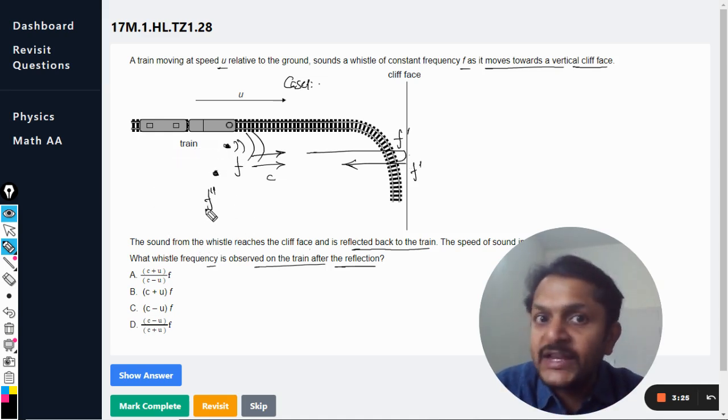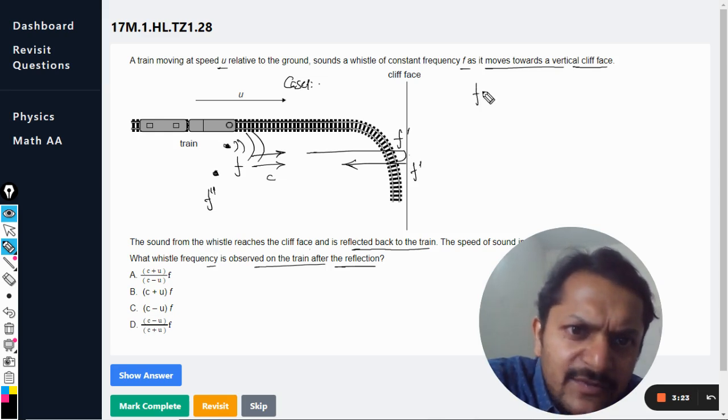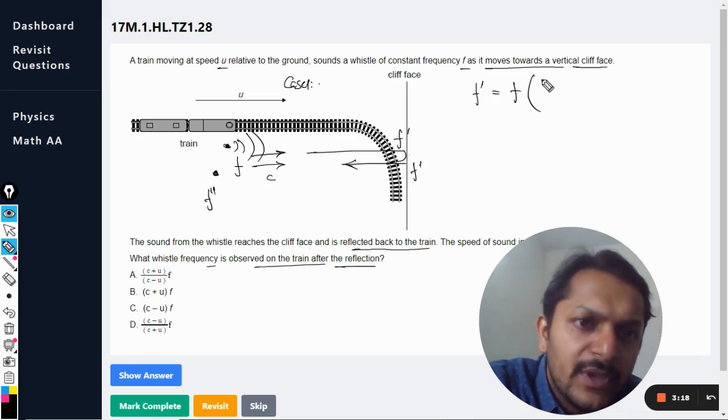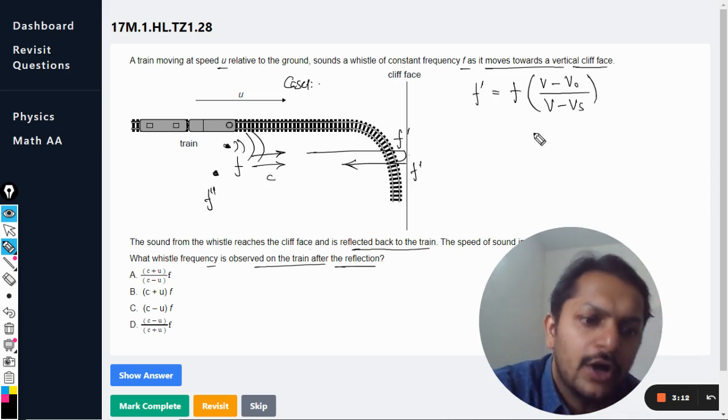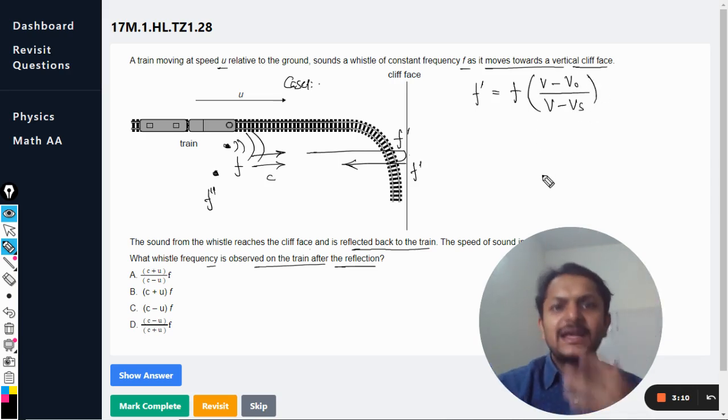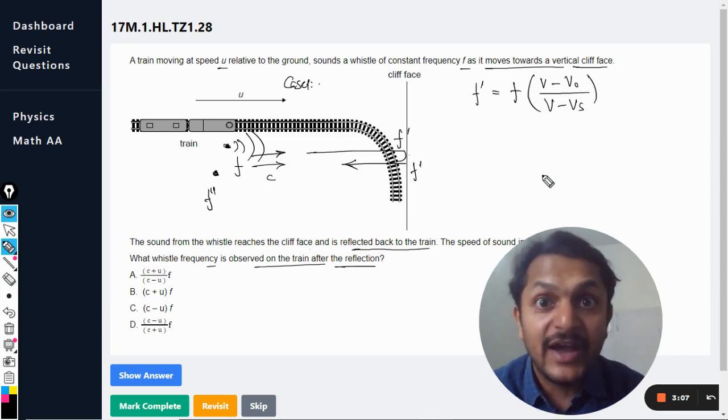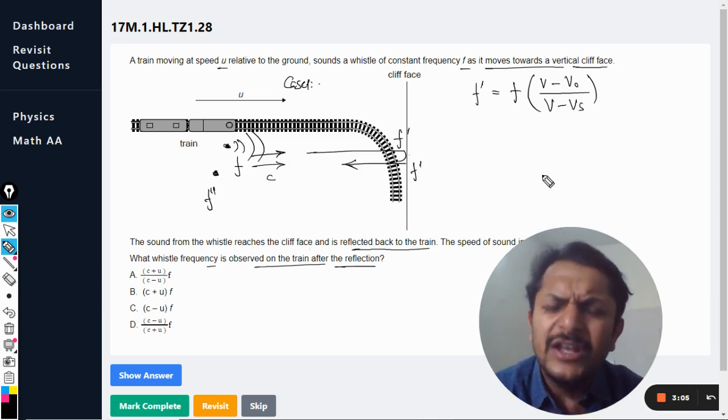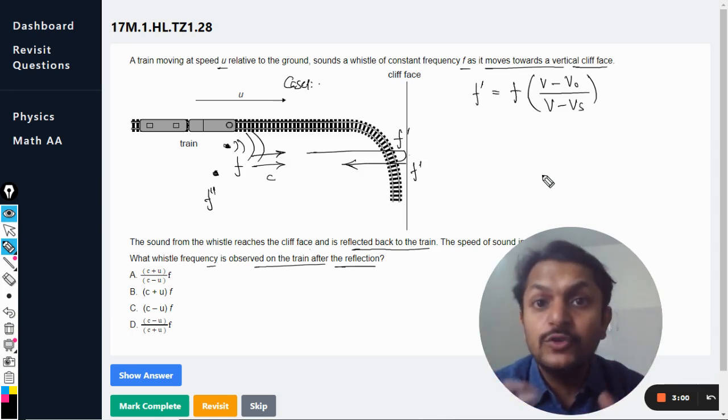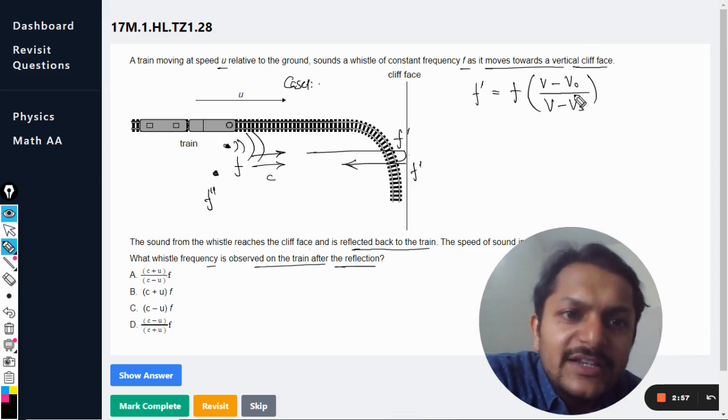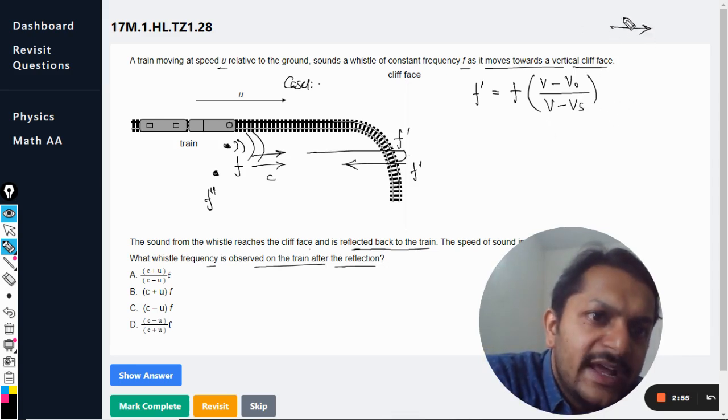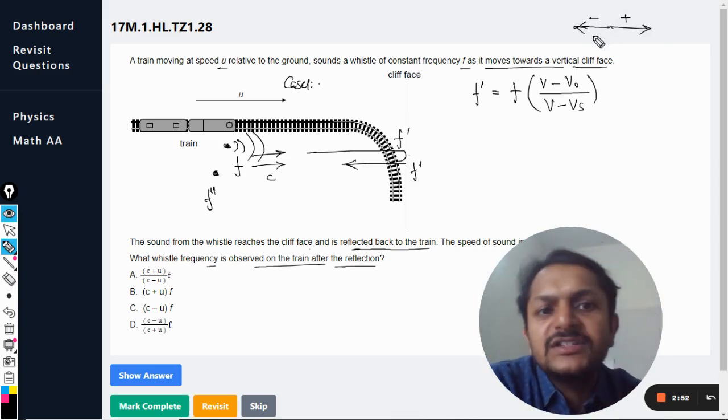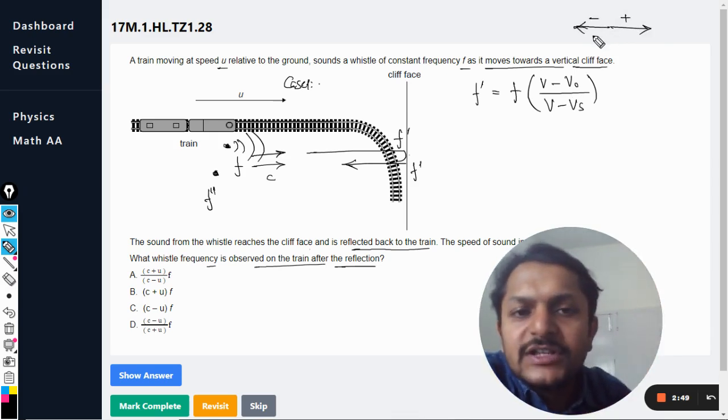So we want to find f double dash. As we know the formula, f dash is given as f into v minus the velocity of observer divided by v minus the velocity of the source. This is the formula that I use. In many other questions for the Doppler effect I have explained it really well, so you can refer to those videos in detail. In this, what happens is we just take one direction as positive and another direction as negative, and we substitute the values with the sign convention. Everything falls in place.